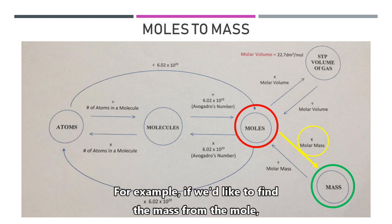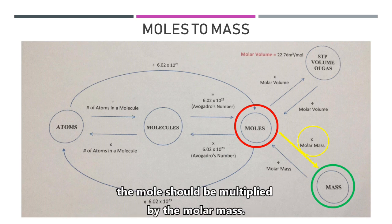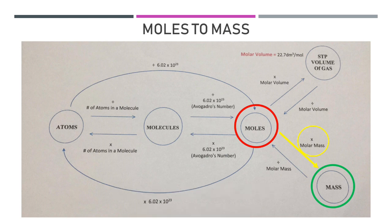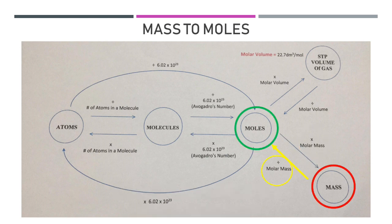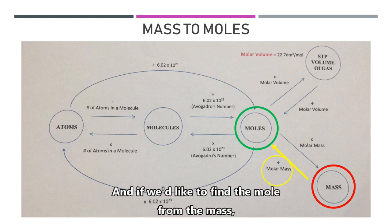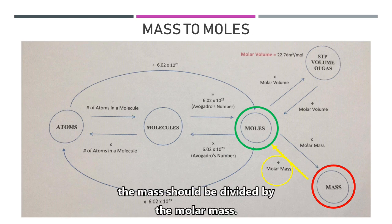For example, if we would like to find the mass from the mole, the mole should be multiplied by the molar mass. And if we would like to find the mole from the mass, the mass should be divided by the molar mass.